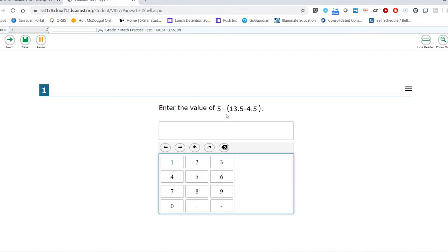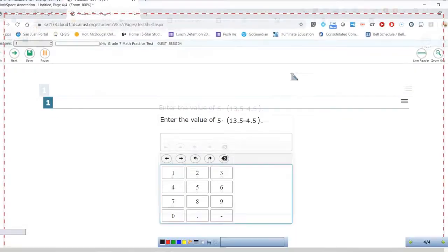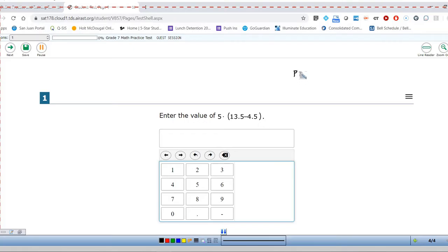Enter the value of 5 times the quantity of 13.5 minus 4.5. So if you remember your order of operations or PEMDAS. Of course P stands for parentheses, E is exponent. We do multiplication and division from left to right, and then finally we finish up with addition and subtraction. So we're going to start with the parentheses here. And it's actually you don't do parentheses. You do what's inside the parentheses.